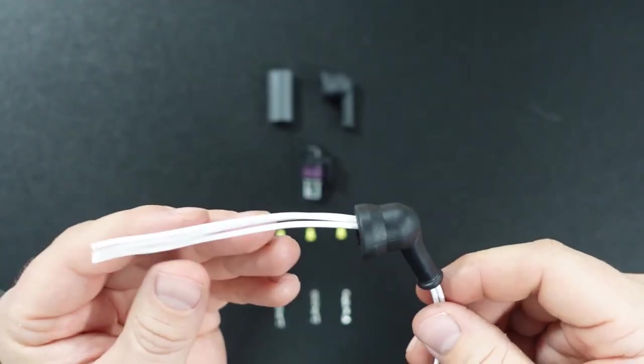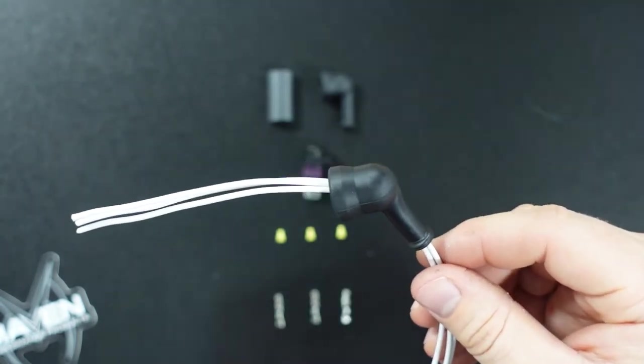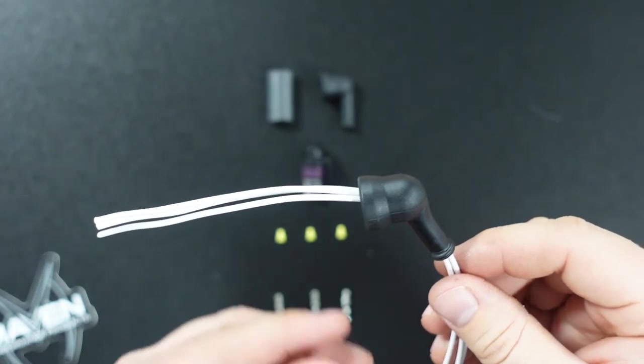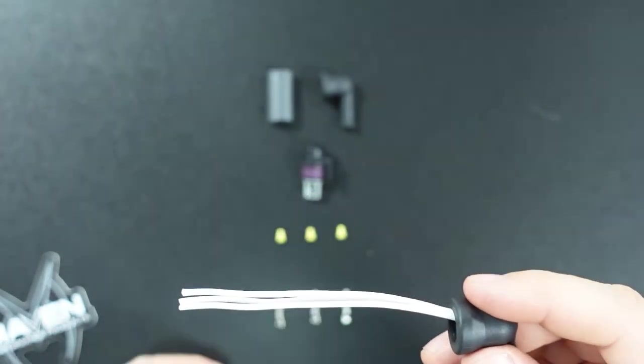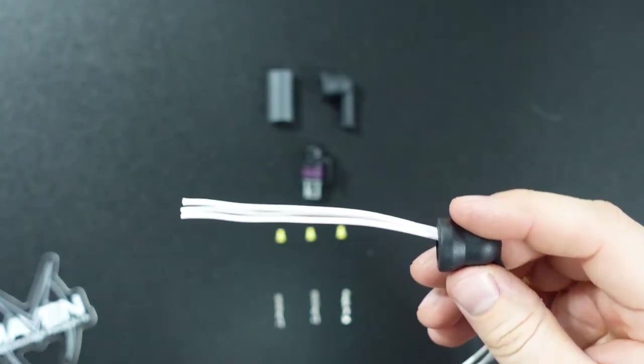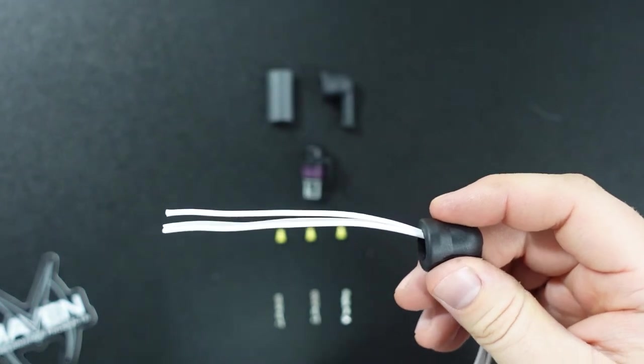To start the assembly, you're going to make sure you slide any boot or heat shrink over the wires before you start to crimp the terminals onto the end of the wire. Make sure you get anything that you need to slide on there and then you can begin to place the seals onto the wire and strip the wire to crimp the terminal.